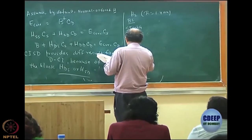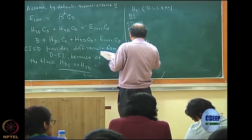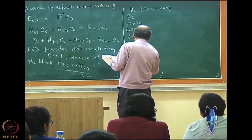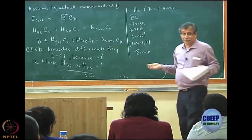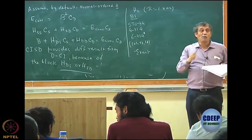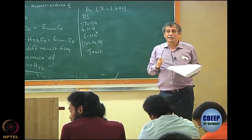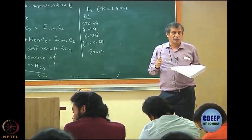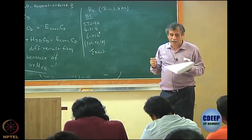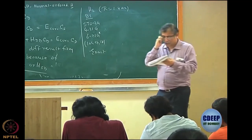The very large basis is 10s, 5p, 1d. Then we have the near-exact result. For hydrogen molecule, almost near-exact results have been obtained by Kolos and Wolniewicz — a very famous paper which appeared in the Journal of Chemical Physics.